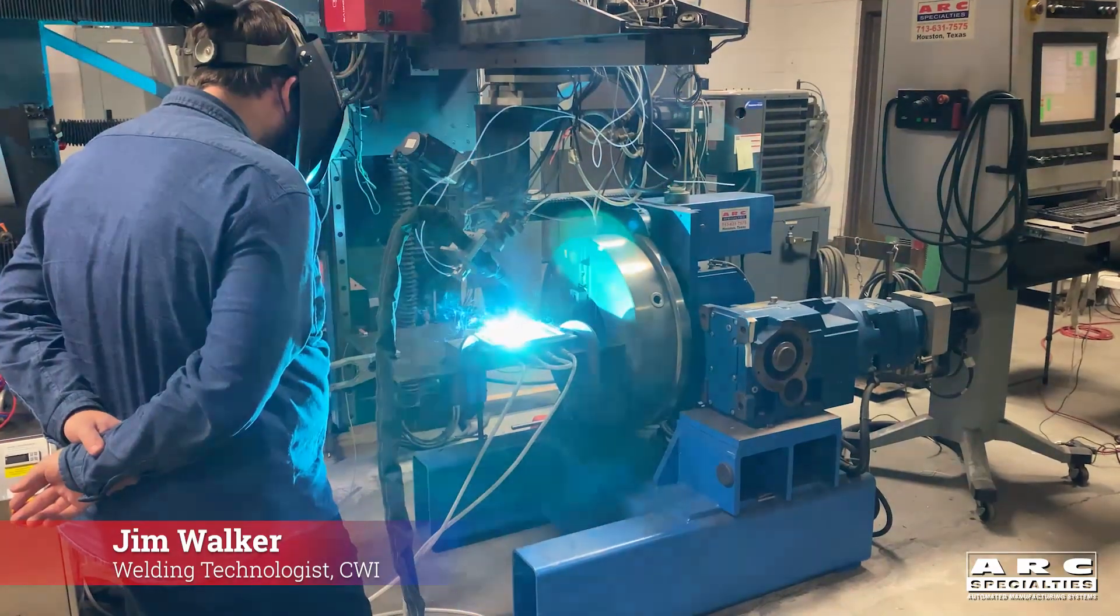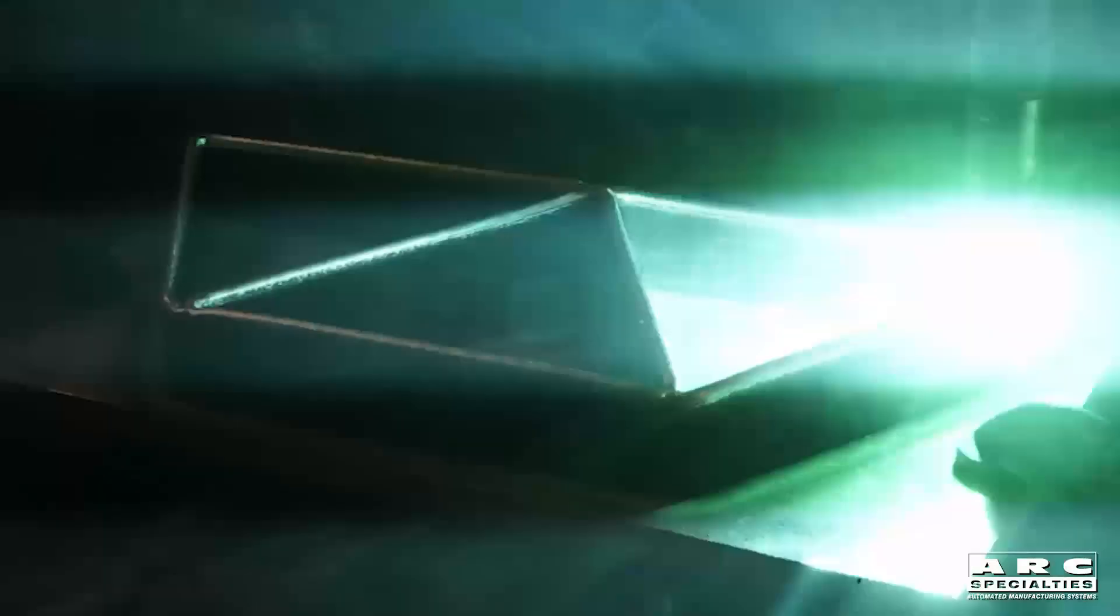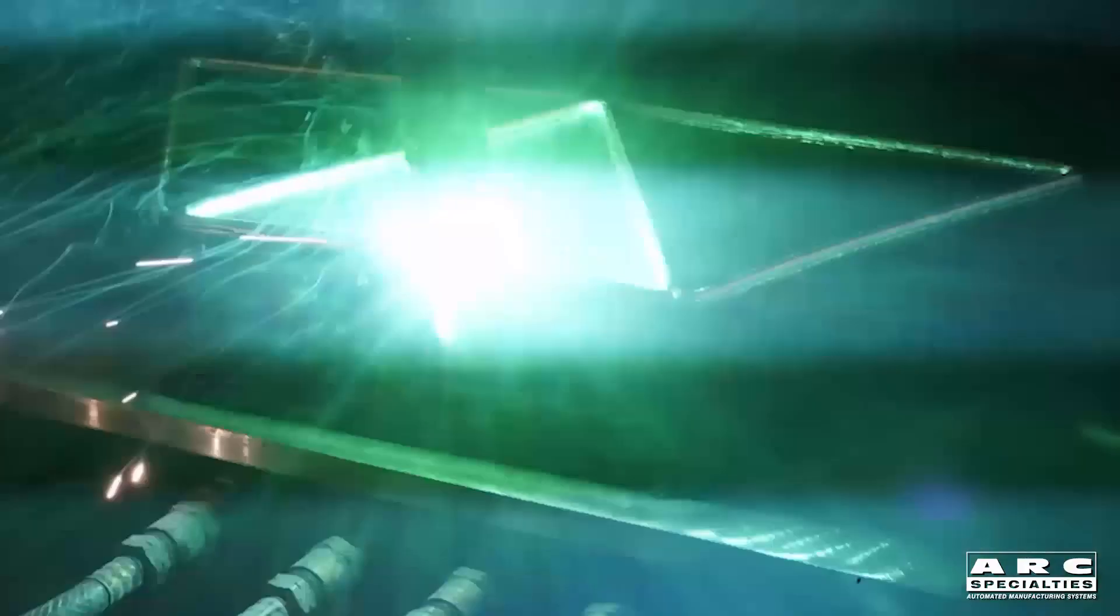This makes sense. We're putting down about three pounds per hour with gas metal arc. One thing we've learned from additive manufacturing of aluminum is faster is actually better.